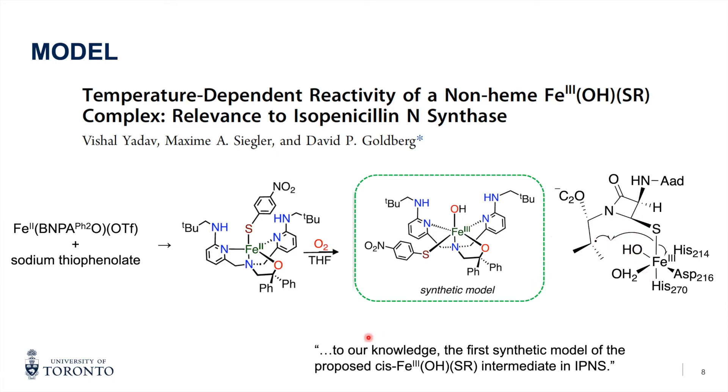And they claimed that, to their knowledge, this is the first synthetic model of this intermediate in the IPNS. And previously, computational studies showed that sulfur transfer is kinetically favored over hydroxylation. But there's never been a synthetic model to verify that. But the team believes that this model can do just that.